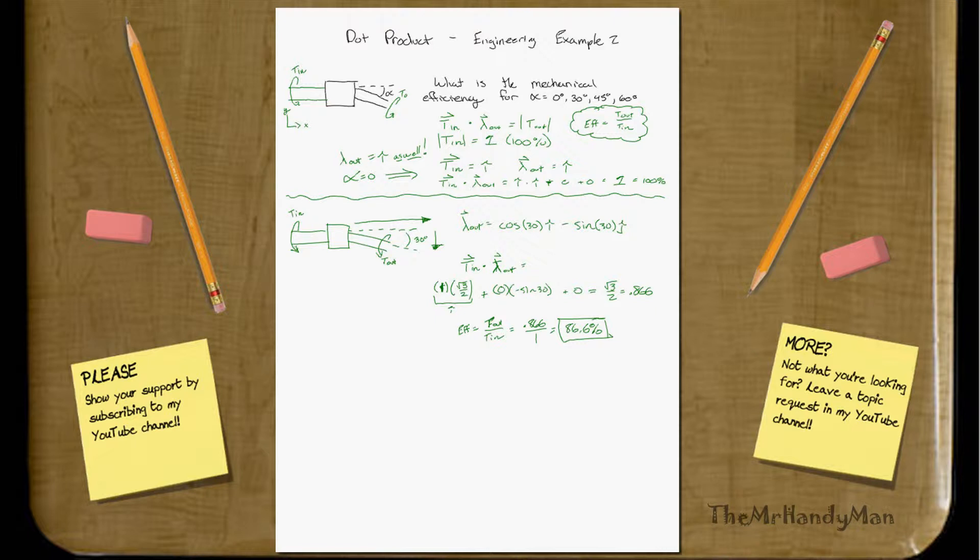Let's do another one. I'll keep drawing it. T_in, T_out. Let's say that alpha in this one is 45 degrees. We're going to do the same approach. It doesn't change by any means. Cosine 45 i minus sine 45 j. That's just going to be rad 2 over 2 i minus rad 2 over 2 j.